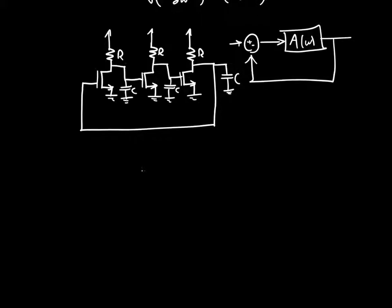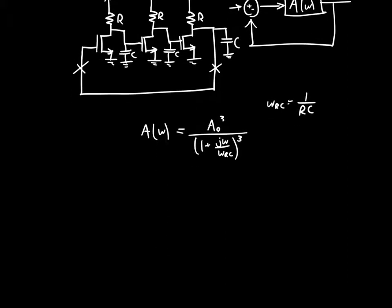And so the forward path gain of this overall circuit, if we just break the feedback path, A of omega, is just A0 cubed, which is just the DC gain, divided by 1 plus J omega over omega RC, and that's cubed because there's three stages in succession with each other. And omega RC is just 1 over RC, it's just 1 over our RC time constant.